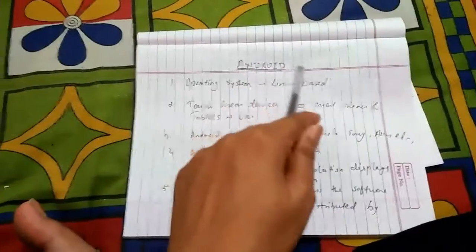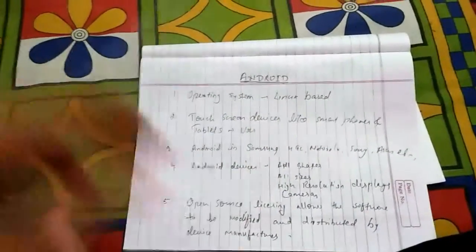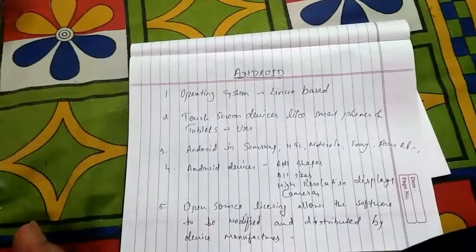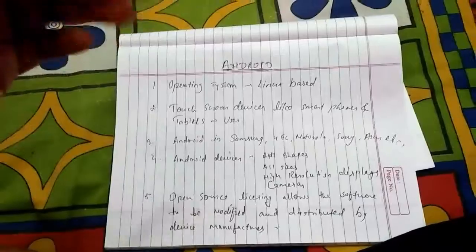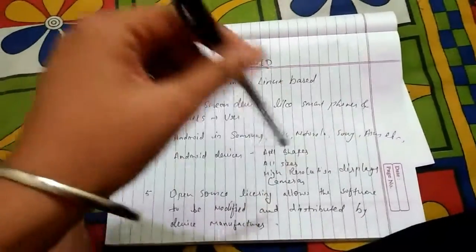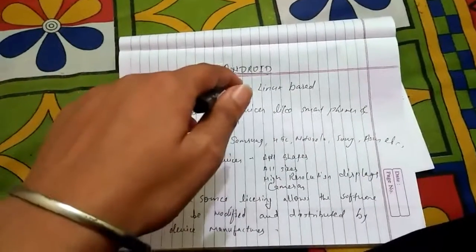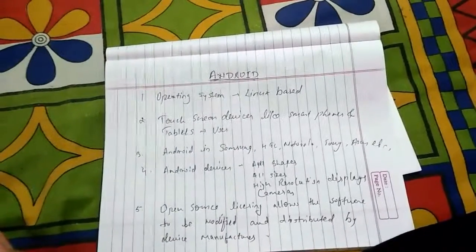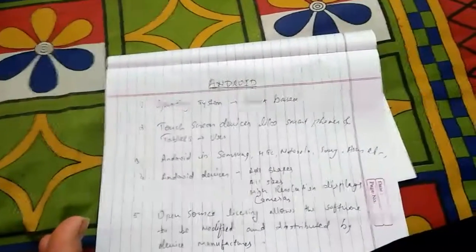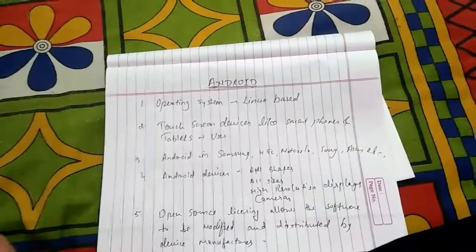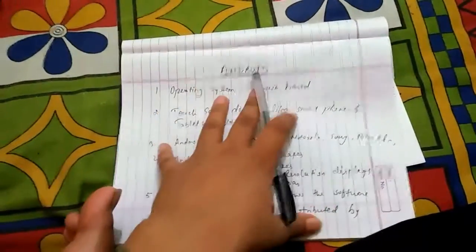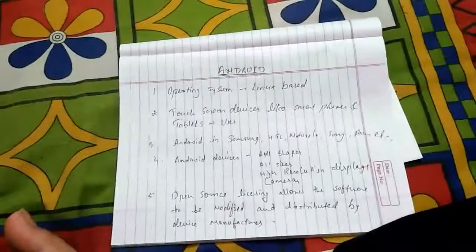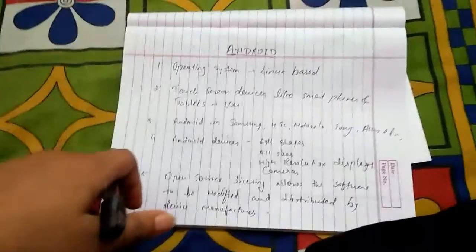Android phones are very easy to operate, which is why a large number of people prefer Android phones. Apart from Android, we have the iOS operating system used by iPhones, and there is also the Windows operating system which Nokia phones used to use. So these are the different types of operating systems — Android, iOS, and Windows — used in phones, tablets, and laptops to make them work. Thank you guys, peace.